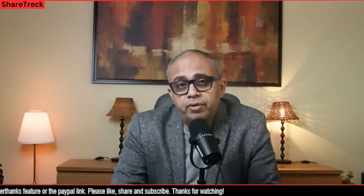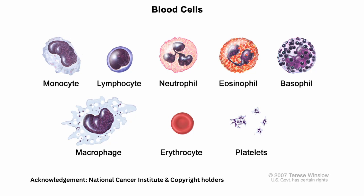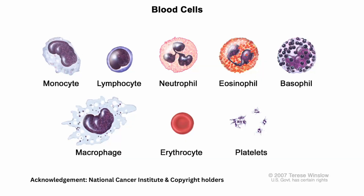The next type of cells are the neutrophils. Neutrophils are the most abundant type of white blood cell and are the first responders to infection or tissue damage. They are highly effective in engulfing and destroying pathogens through a process called phagocytosis. The other type, eosinophils, are involved in fighting parasitic infections and play a role in allergic reactions. They release toxic substances to kill parasites and modulate the immune response.